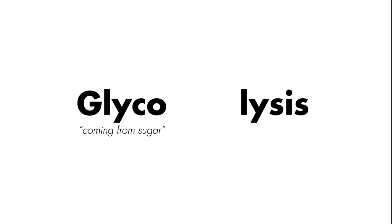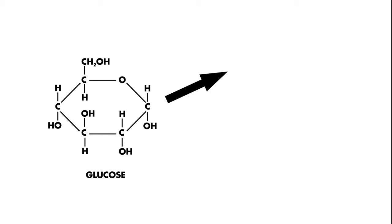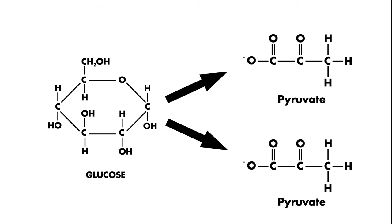Glycolysis literally means the splitting of glucose, the prefix glyco meaning coming from sugar and lysis meaning to unbind or split. So therefore glycolysis is the metabolic process that takes glucose and breaks it down into two pyruvate molecules.